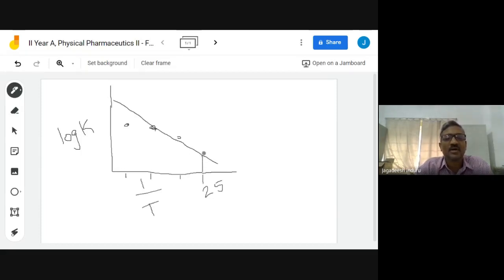You have got one point intercepted to this line. You draw a parallel line to the y-axis. Now you have got that one point here, that is your k value at 25 degrees centigrade.